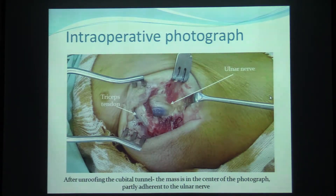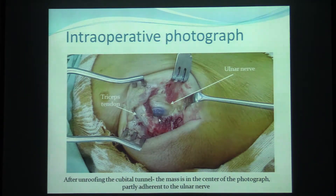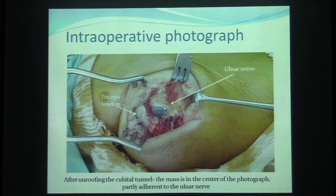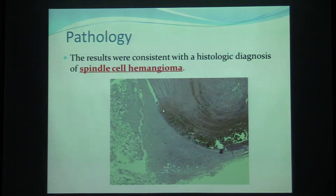Surgery was advised because of the symptoms. In the intraoperative photograph, we can see the mass here, very adjacent to the ulnar nerve. On pathology, it was a spindle cell hemangioma.